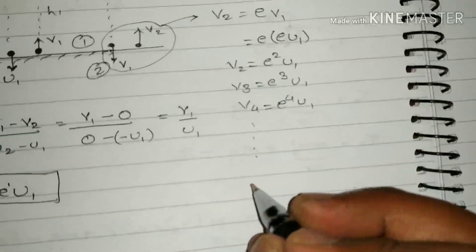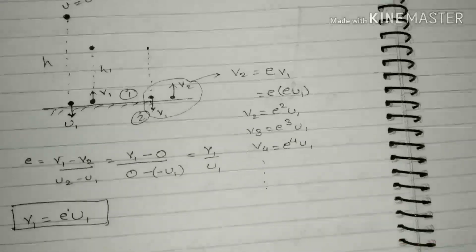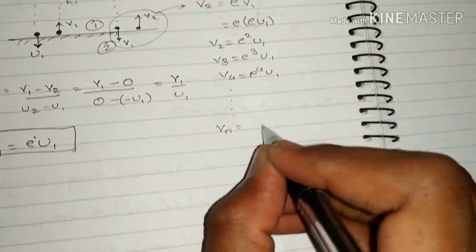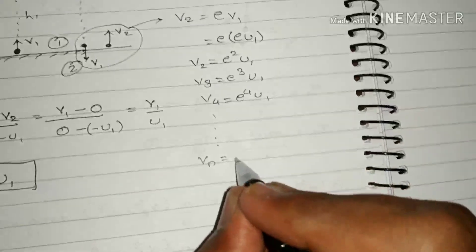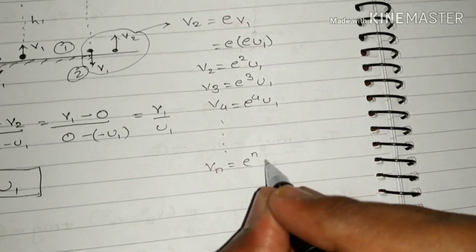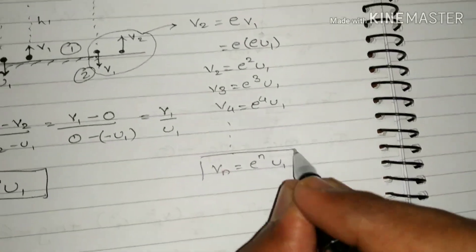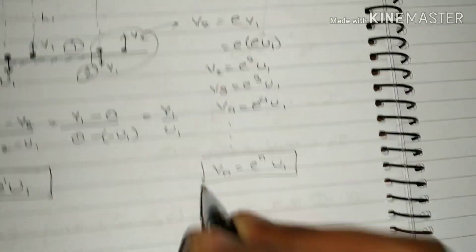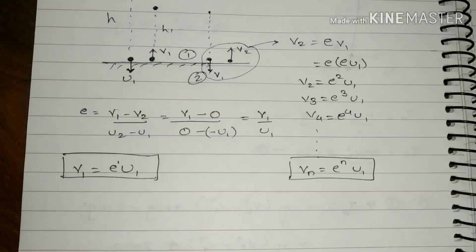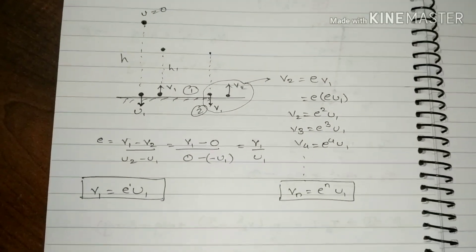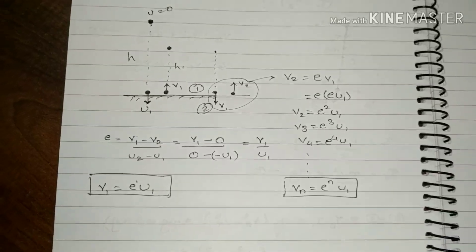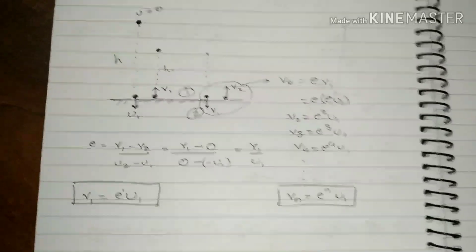That means after n bounces, the velocity of the ball coming up will be equal to e raised to n times u1. This expression gives you the final velocity after the nth bounce.